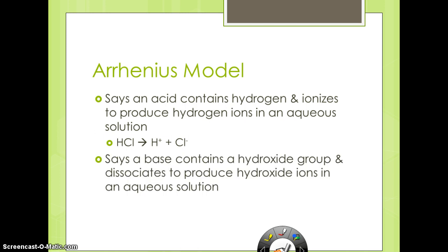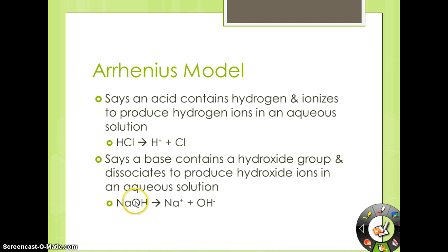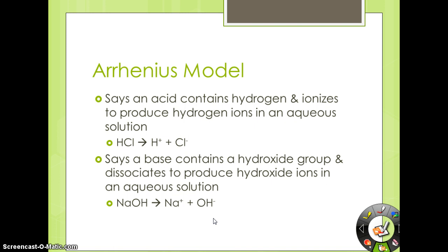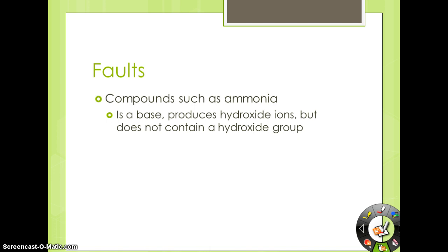The Arrhenius model says that a base has to contain a hydroxide group and will dissociate or ionize to produce hydroxide ions in an aqueous solution. So according to Arrhenius, a base has to have an OH group, and when it breaks apart in water, it's going to give you hydroxide ions. So sodium hydroxide has an OH group here. When you put it in water, it's going to separate into sodium and hydroxide. The only problem with this is that things like ammonia, which is NH3, do not have an OH group, but they are definitely a base. It will make hydroxide ions, but it doesn't contain a hydroxide group.